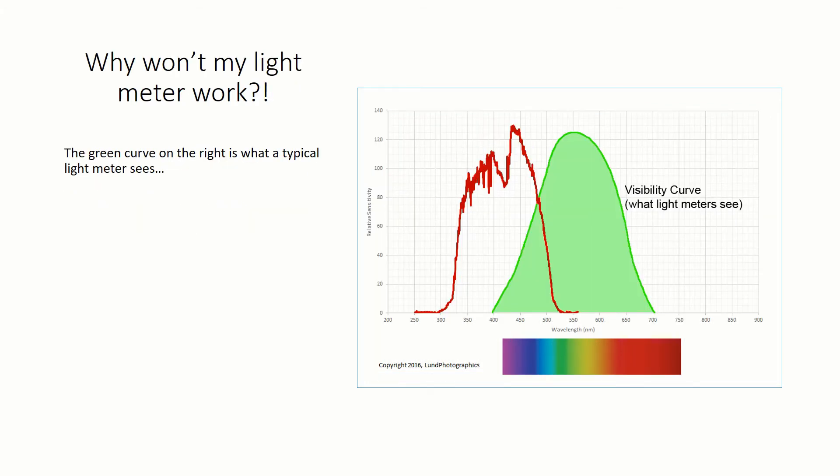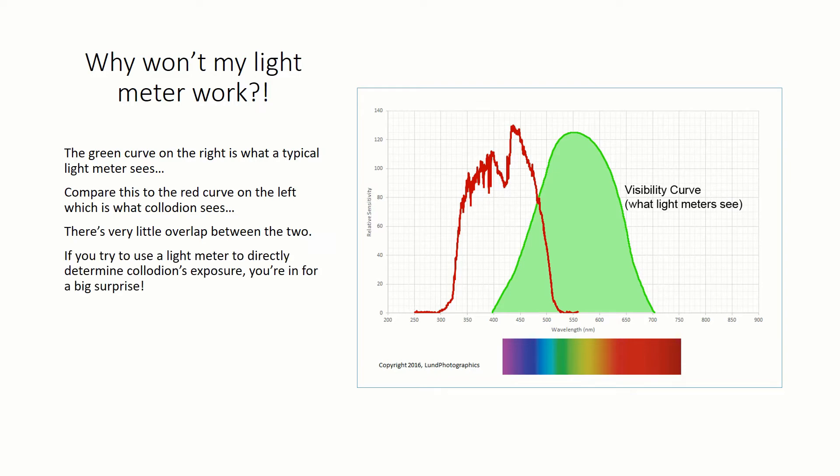Let's first look at what a typical light meter sees compared with collodion. In this graphic, I've overlaid a light meter's visible range over collodion's spectral sensitivity profile. It doesn't take a rocket scientist to see that there's very little overlap between the two, and if you try to use a light meter directly to determine collodion's exposure, you're in for a big surprise.